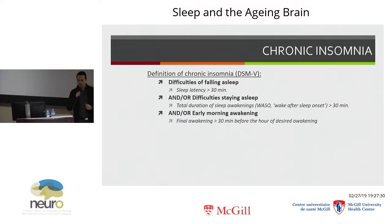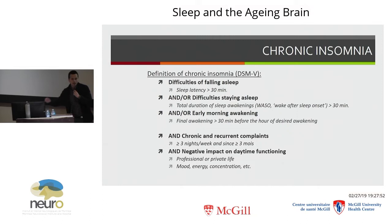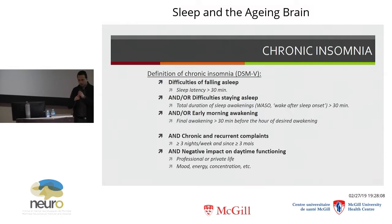We need to talk about insomnia disorder or chronic insomnia — you need other things. It needs to be chronic, more than three months, and recurrent, more than three nights a week. And probably the most important point is that it must have some impact on your daytime functioning to be called an insomnia disorder — problems staying attentive, concentrated, memory problems, impaired mood, things that impact your professional or private life. This is what differentiates insomnia from normal sleep changes with aging. If there's no daytime consequence, just don't stress — it's probably because of your age.